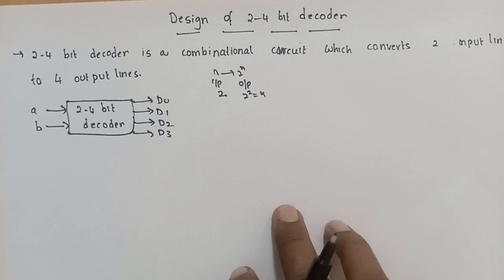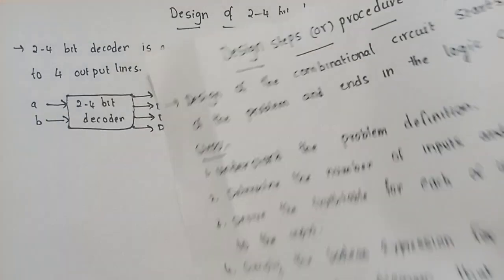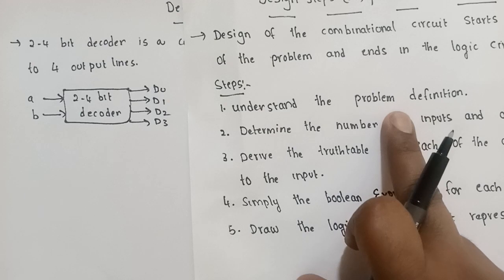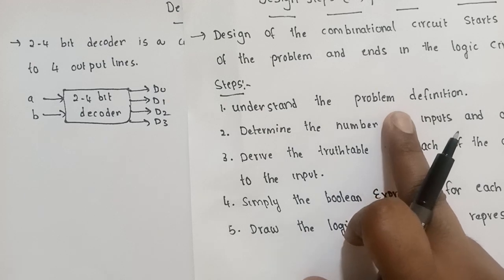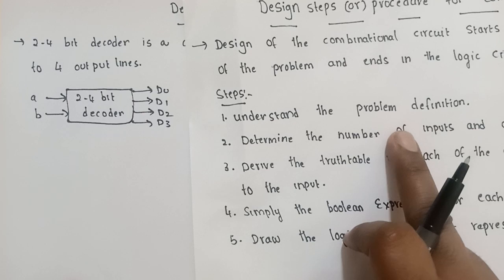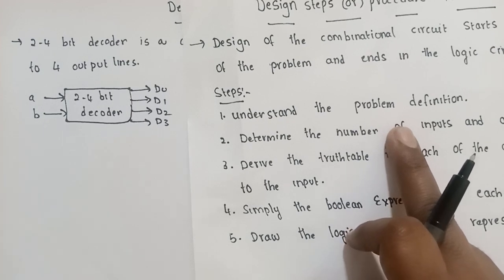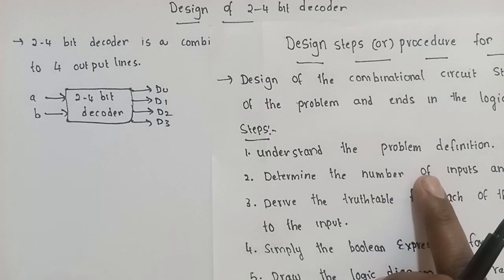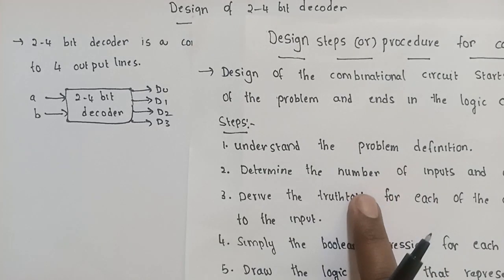The first step is to understand the problem definition. The problem is to understand the decoder as a particular combinational circuit. The 2-to-4 bit decoder is our problem. The second step is to determine the number of inputs and outputs.